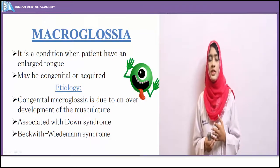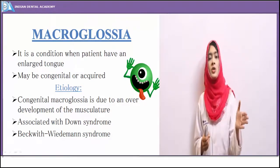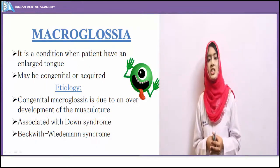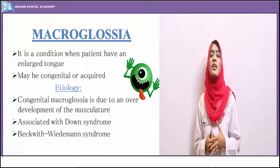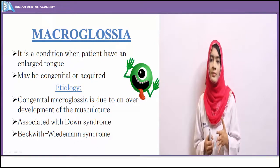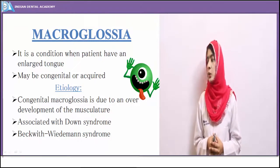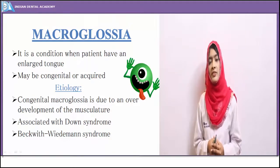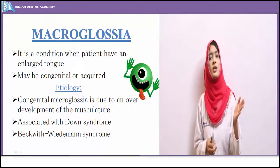Macroglossia means enlarged tongue, also known as prolapse of tongue. It may be congenital or acquired and is most commonly associated with Beckwith-Wiedemann syndrome and Down syndrome, both of which present with a characteristically enlarged tongue. Congenital macroglossia is due to extreme overdevelopment of musculature. It is of two types: true macroglossia, where the tongue is genuinely enlarged, and pseudo-macroglossia, caused by habitual low or high tongue posture leading to overdevelopment of musculature.